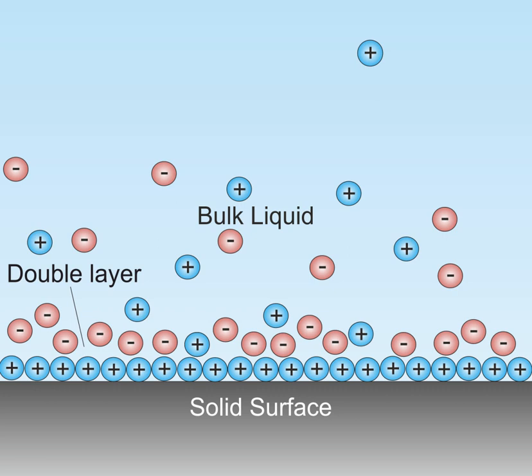The diffuse layer, or at least part of it, can move under the influence of tangential stress. There is a conventionally introduced slipping plane that separates mobile fluid from fluid that remains attached to the surface. Electric potential at this plane is called electrokinetic potential or zeta potential. The electric potential on the external boundary of the Stern layer versus the bulk electrolyte is referred to as Stern potential. Electric potential difference between the fluid bulk and the surface is called the electric surface potential.